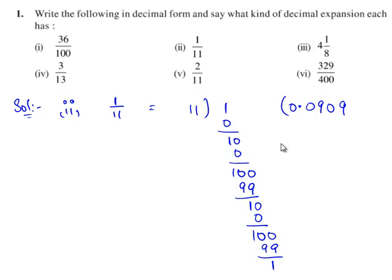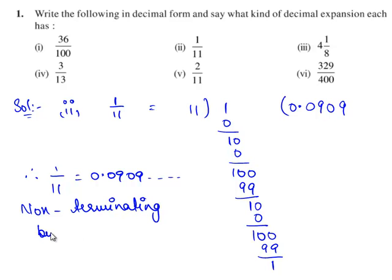So from this division, the process continues as the remainders are repeating. Therefore, the decimal expansion for 1 by 11 is equal to 0.0909 and so on, as the digits 0 and 9 are repeating. Therefore the decimal expansion is non-terminating but repeating.